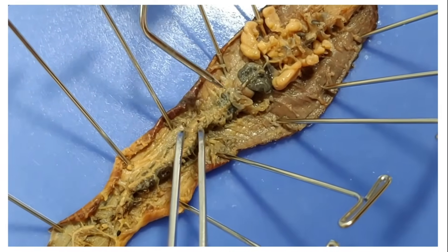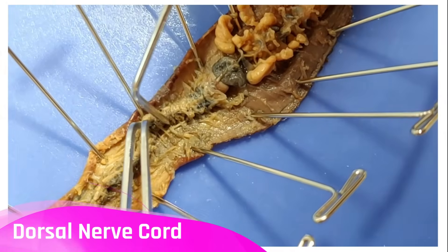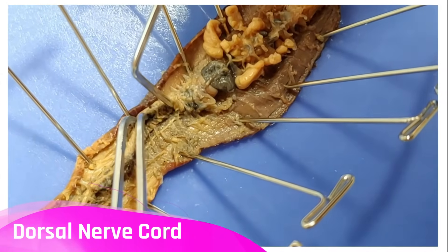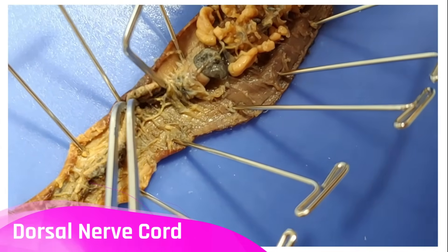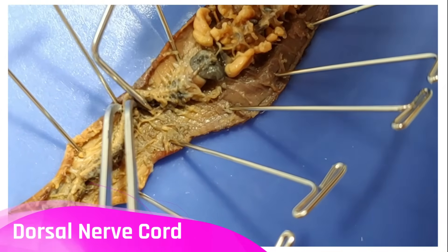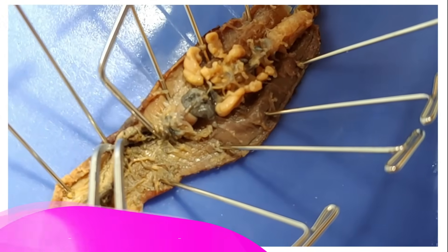Finally, when I move aside the intestine, you can see the dorsal nerve cord here. This white string-like thing. I'm going to try to pull it up. So this dorsal nerve cord is basically the spinal cord of the worm.